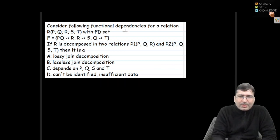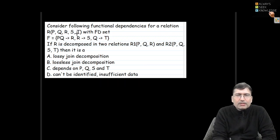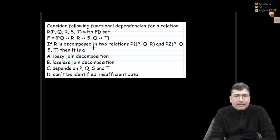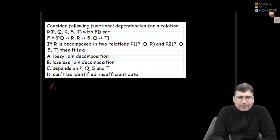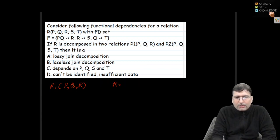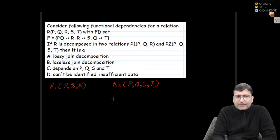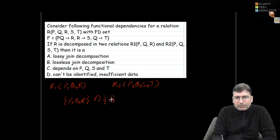Let's solve another problem. Consider a relation R with attributes PQRST and the given functional dependency set. R is decomposed into R1 having attributes PQR, and R2 having attributes PQST. If we find the intersection of the attribute sets {PQR} and {PQST}, we get P and Q in common.